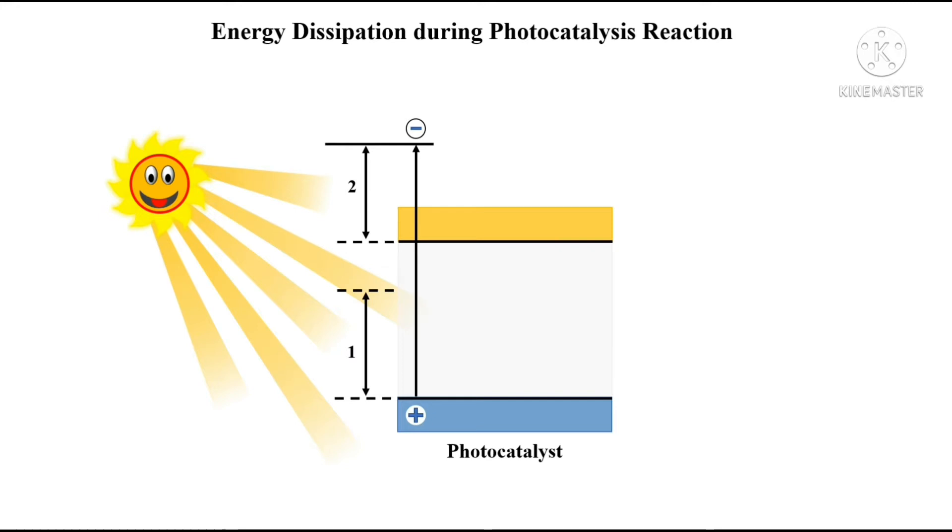As you see here, this is the excitation that occurred with the photons having energy larger than the band gap. The electron gets excited to a somewhat higher level but it suddenly loses its extra energy and comes back to the conduction band. So this is the second type of loss that occurs during the photocatalysis reaction.